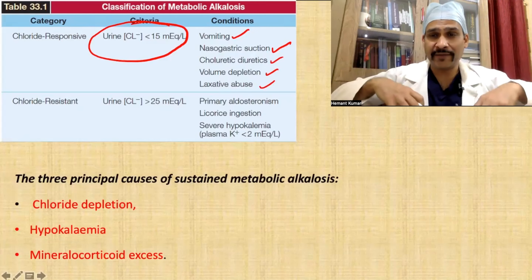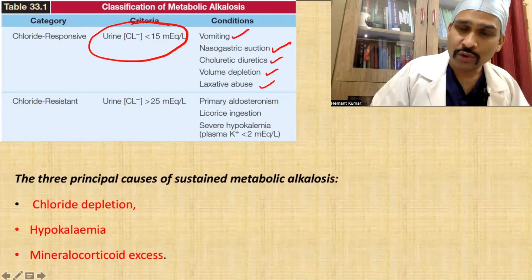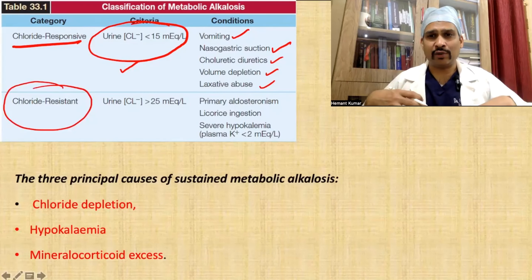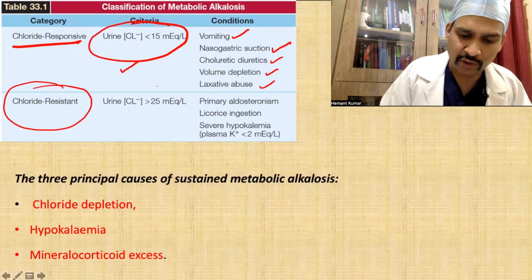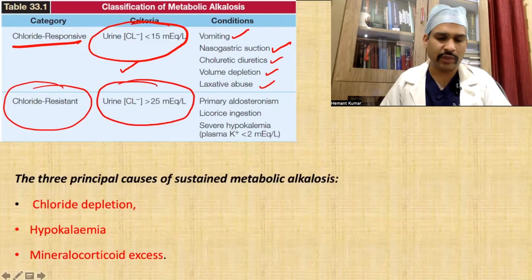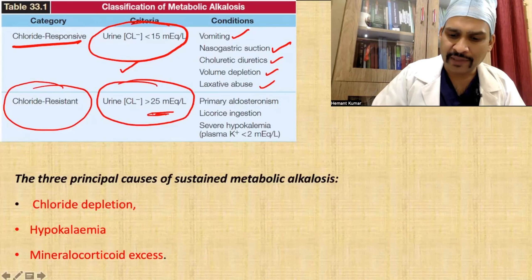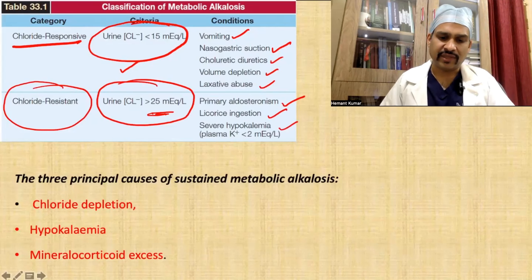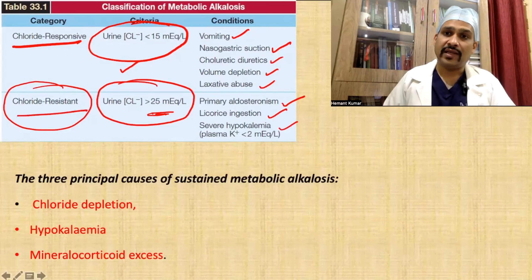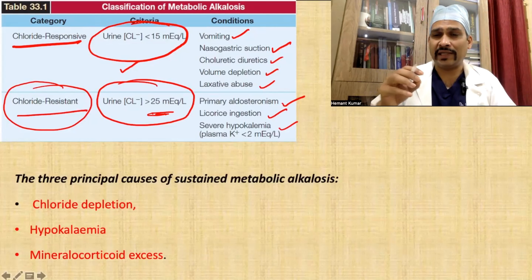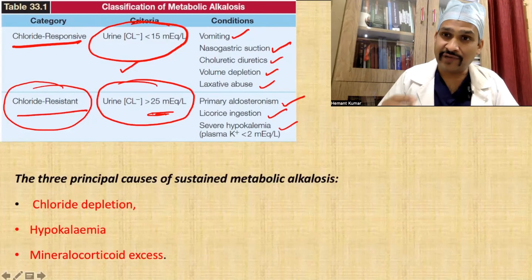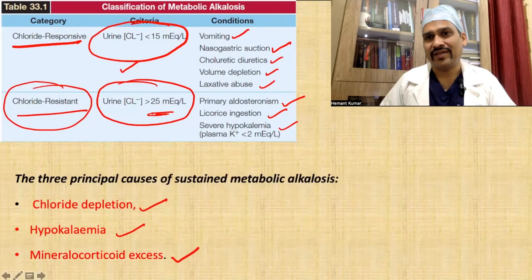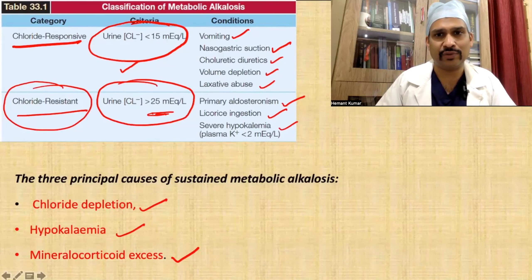In chloride-resistant metabolic alkalosis, chloride is adequate inside the body so urine chloride is more than 25. Causes include primary hyperaldosteronism, licorice ingestion, and severe hypokalemia. In sustained metabolic alkalosis, we must rule out chloride depletion, hypokalemia, and mineralocorticoid excess.